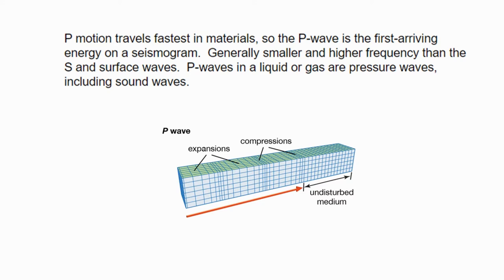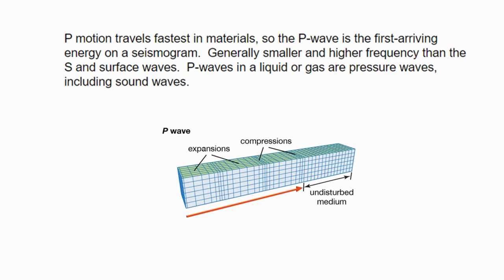Now let's understand the characteristics of each type of wave generated and recorded in the seismometer. The P-wave is the first wave to arrive and it is recorded in seismogram format. It is smaller and higher frequency than the S and surface waves. P-waves in a liquid or gas are pressure waves, including sound waves. Looking at the image, you can observe various expansions and compressions along with undisturbed medium. The P-wave is the fastest traveling wave.